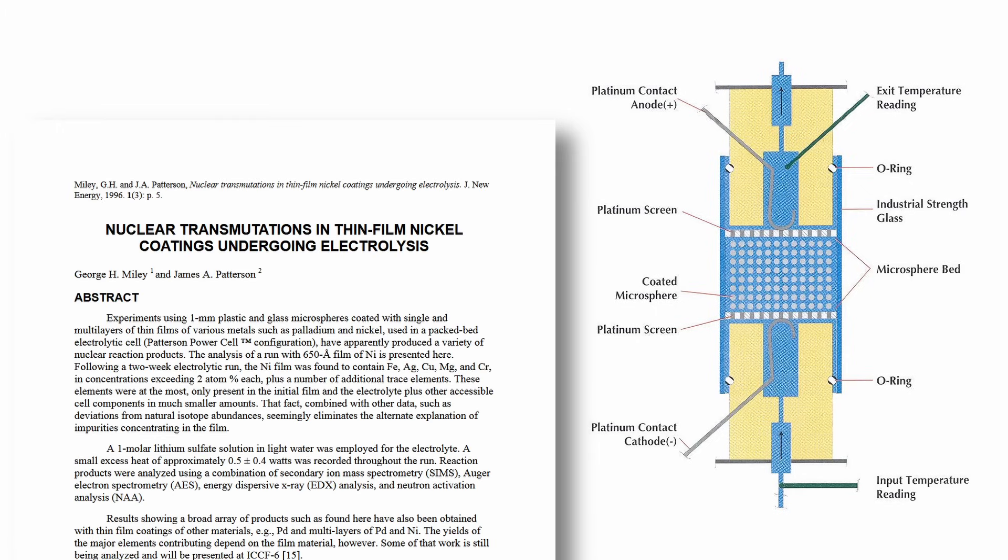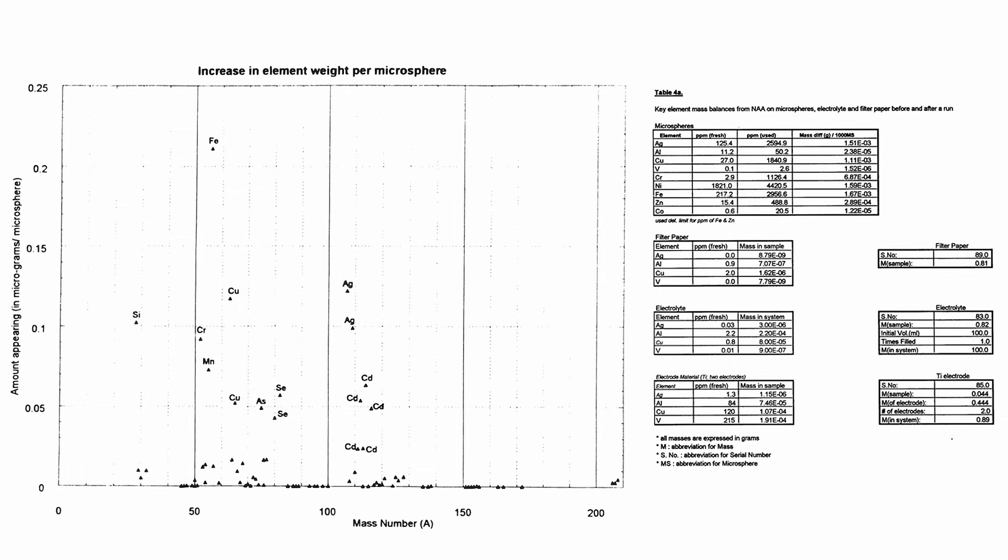Miley and Patterson utilized a different approach, involving electrolyzed plastic beads coated in palladium and nickel in a circulating light water electrolyte. This setup allowed them to directly measure the production rates of new elements by comparing pre- and post-experimental concentrations, providing quantitative insights.